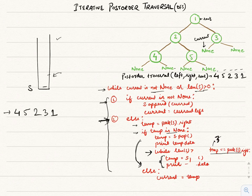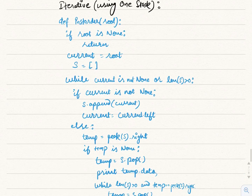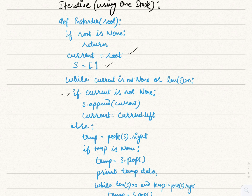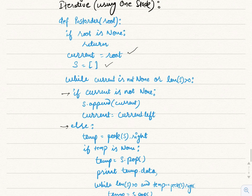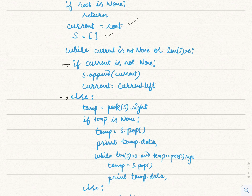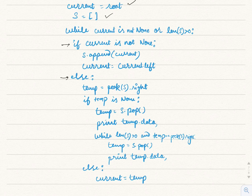Looking at the code, we initialized current to root and one empty stack s. Inside the while loop we wrote the two conditions we discussed above. By following these two conditions we get our post-order traversal iteratively. Thank you.